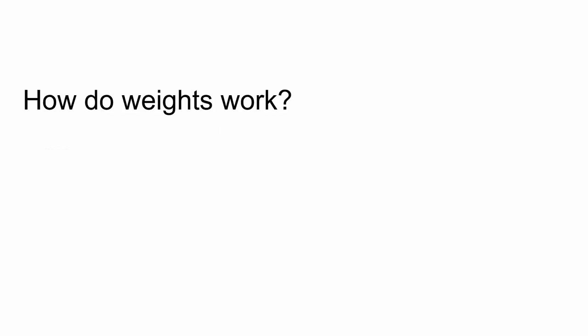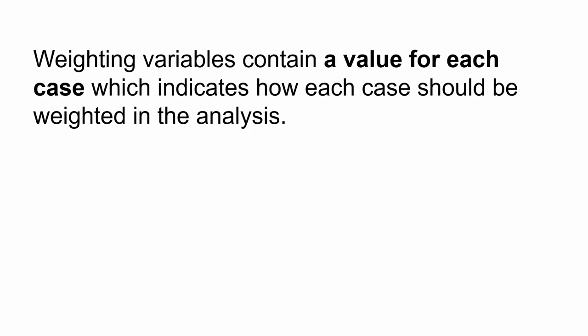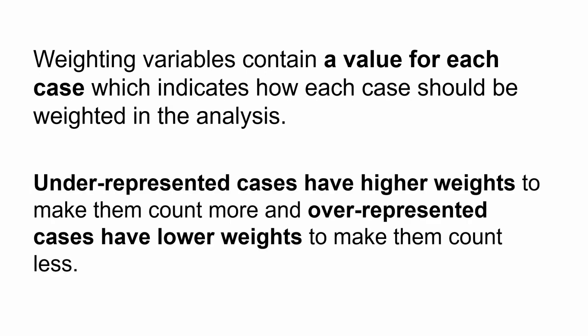Let's take a closer look at how weights work. The weighting variable contains a value for each case which indicates how the case should be weighted during analysis. Underrepresented cases have higher weights to make them count more, and overrepresented cases have lower weights to make them count less. For example, we might find higher weights for individuals that live in larger households, or for those coming from population groups underrepresented in the sample, due to either chance or non-response.